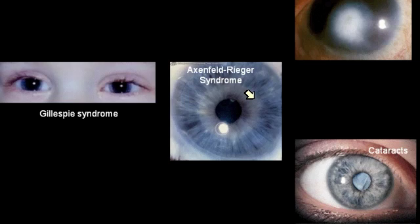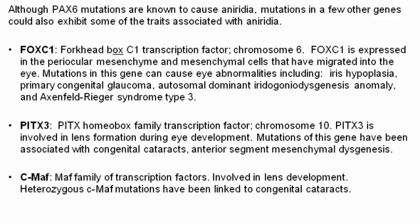Here's Axenfeld-Rieger, and this is Peter's anomaly — there are a couple of other genes that can give rise to a corneal defect that can be interpreted as Peter's. And of course, cataract occurs in several different gene mutations. What discriminates a Pax6-type mutation giving rise to aniridia from a mutation in one of these other genes is a hard thing to know until we actually go in and begin sequencing Pax6.